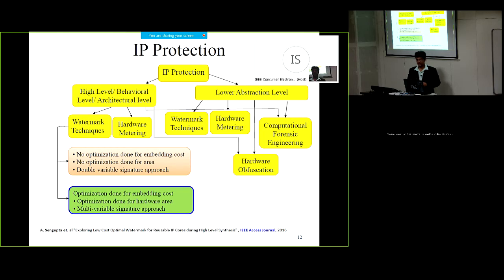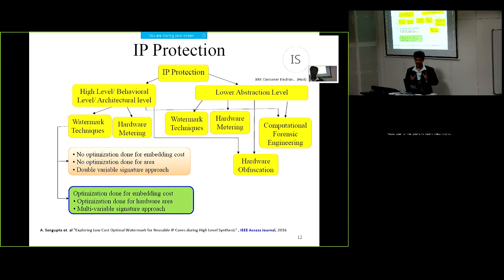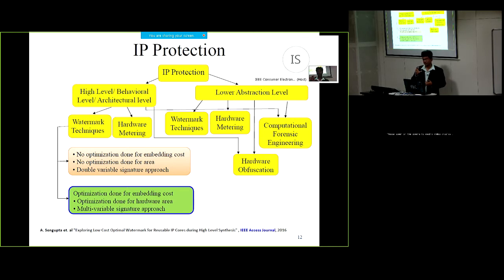Among the given N inputs it is completely difficult to find out how many bits are actually used for keys and how many are used for primary inputs. Even if the attacker finds out the number of key bits, it would be very hard to find the possible combination and the possible sample of those key bits.